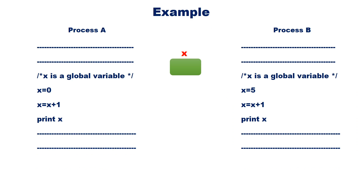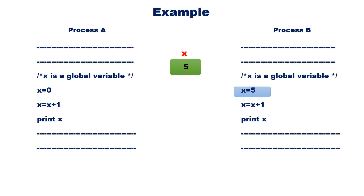Let us assume a sequence of execution. Process A initializes variable X to 0, then increments X by 1, so X becomes 1. Assume that Process A has been interrupted and Process B starts its execution. Process B initializes variable X to 5, so X becomes 5. Process B increments X by 1, so X becomes 6. Process B prints the value of X and we get the output 6.